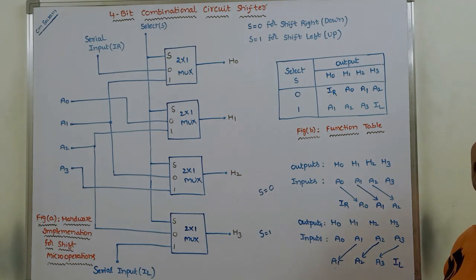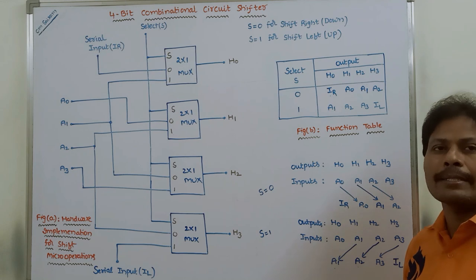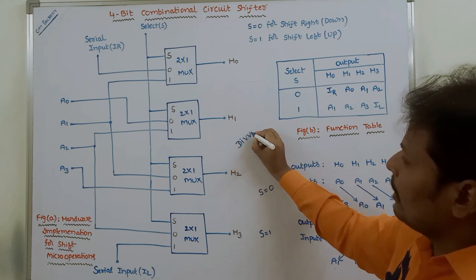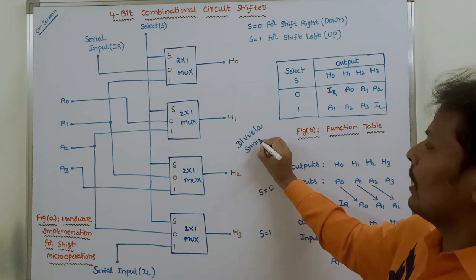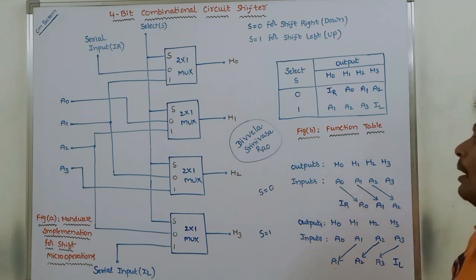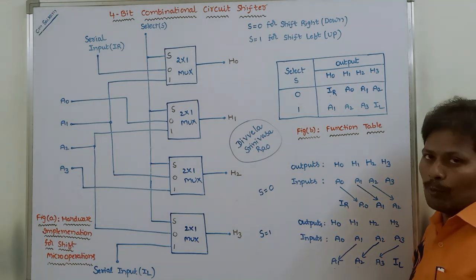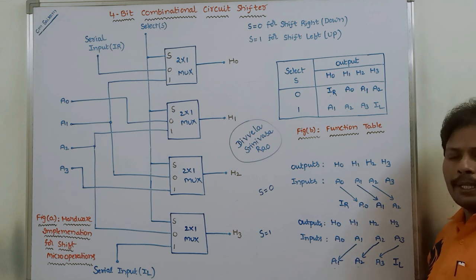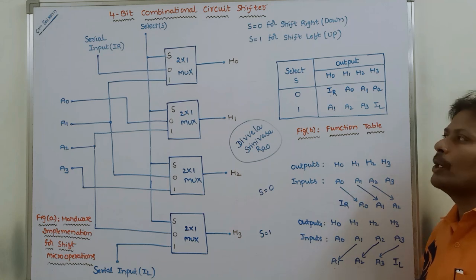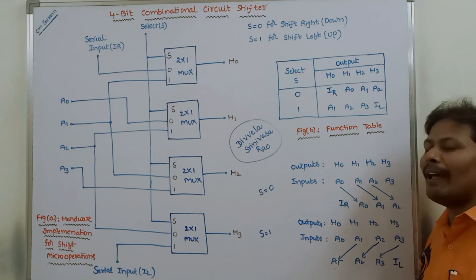This is the description about the 4-bit combinational circuit shifter, or hardware implementation for shift micro operations. I hope all of you understood this video. If you really liked this video, please click on the like button and share this video with your friends and classmates. Please subscribe to my YouTube channel and click on the bell icon to get future updates in computer architecture and organization. If you have any doubts, please put them in the comment section and I will try to clarify. For better understanding, go to the playlist called computer organization on this channel.